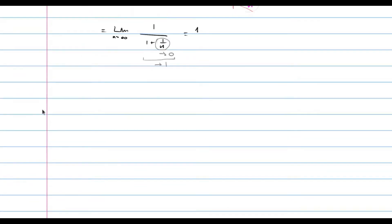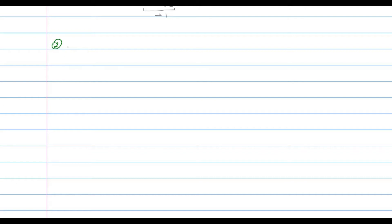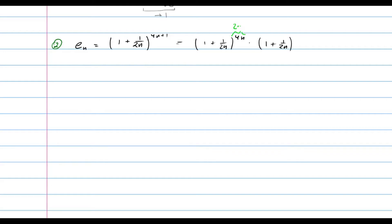Now let's solve another exercise using something from a previous video. We are given the sequence s of n equal to 1 plus 1 over 2n to the power 4n plus 1. Using power properties, we can write this as 1 plus 1 over 2n to the power 4n times 1 plus 1 over 2n, which is 1 plus 1 over 2n to the power 2n, squared, times 1 plus 1 over 2n.